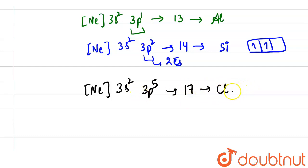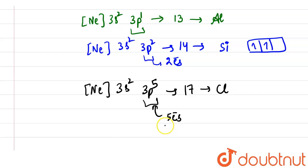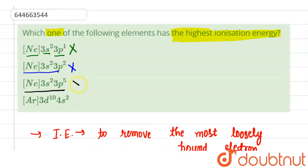In the p orbital, five electrons are present. Chlorine does take higher ionization energy compared to aluminium and silicon, but it doesn't require that much higher ionization energy. So from here we can say that option three is also not correct. Let us look at option four: [Ar] 3d10 4s2.